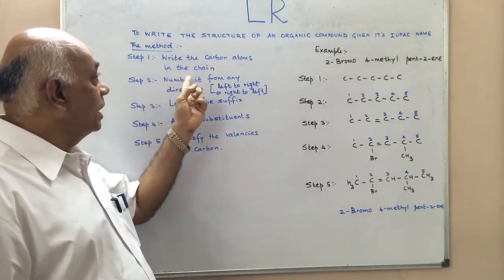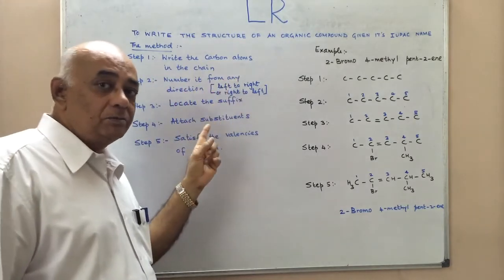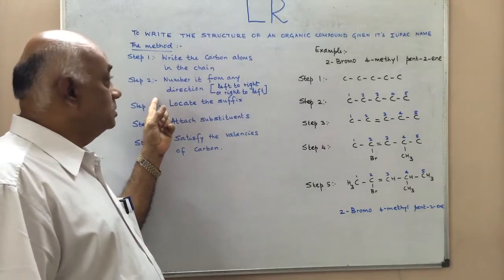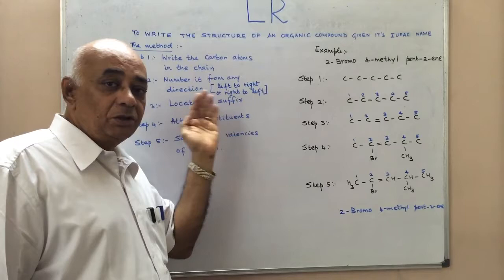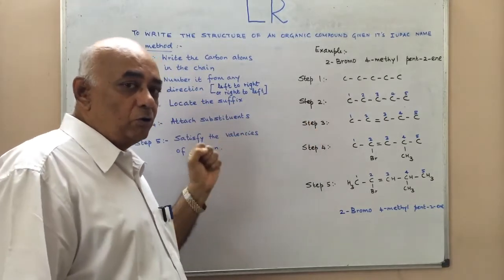In step 1, we write the number of carbon atoms in the chain. In step 2, we number these carbon atoms in any direction, either from left to right or right to left.